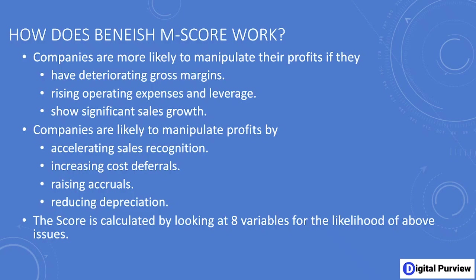The first situation is if a company has a decrease in gross margin, it might incentivize them to take certain measures to make their statements look better. Second, if they have rising operating expenses and rising leverage, that might also incentivize them to manipulate their profits. Third, if they are showing significant sales growth and that growth starts to slow down, it can have a serious impact on their stock price, incentivizing management to hide the slowing sales growth.